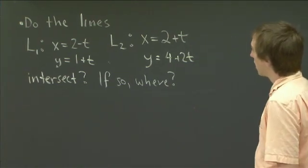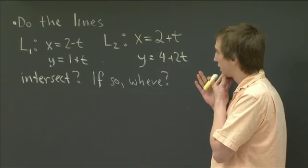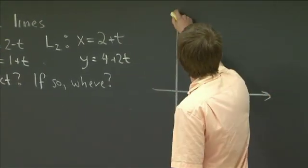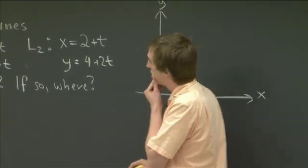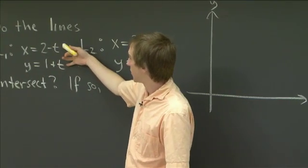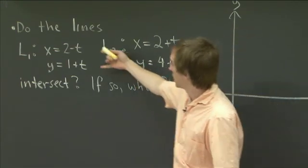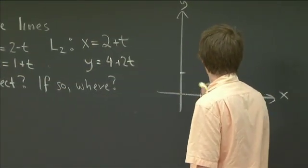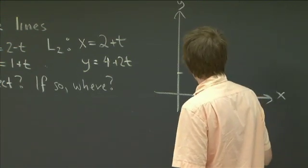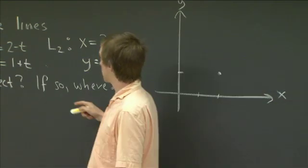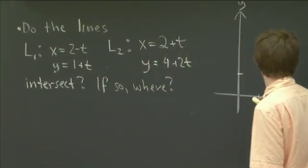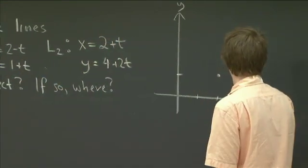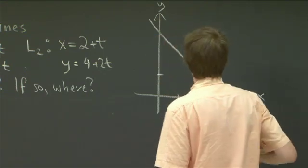Welcome back. Let's get started. We have these two lines in space. Before we start doing any computations, I find it useful to draw a picture. So we have these two lines — we can just find some common points on the lines. If we put in t equals 0 for L1, then it looks like we get the point (2, 1). And if we plug in t equals minus 1, then we get x equals 3 and y equals 0. So there's our line L1.